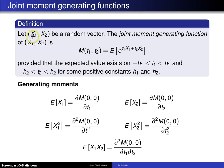Here is the definition. Let x1, x2 be a random vector. The joint moment generating function of x1 and x2 is M of t1, t2 equals the expected value of e to the t1 x1 plus t2 x2, provided that the expected value exists on negative h1 less than t1 less than h1 and negative h2 less than t2 less than h2 for some positive constants h1 and h2. This tailing part of the definition simply says that the expected value has to exist in some neighborhood about the origin.